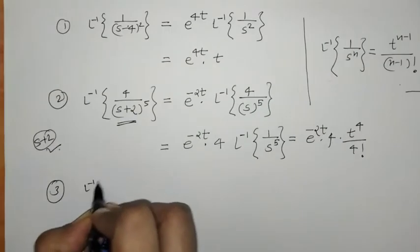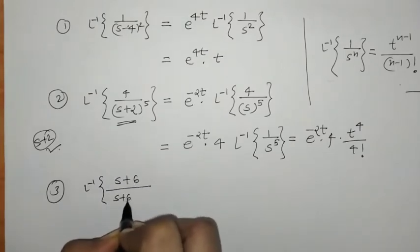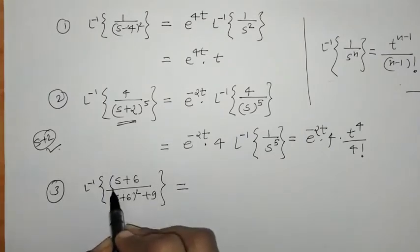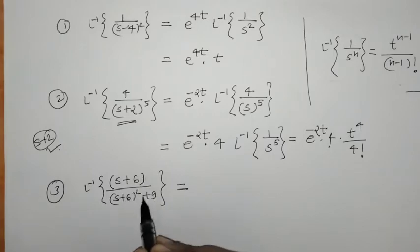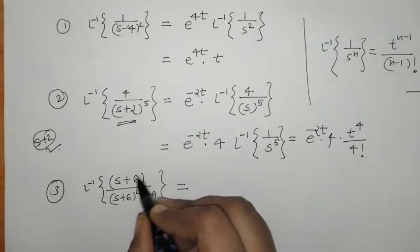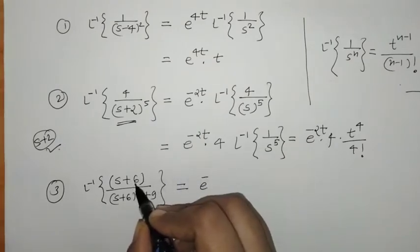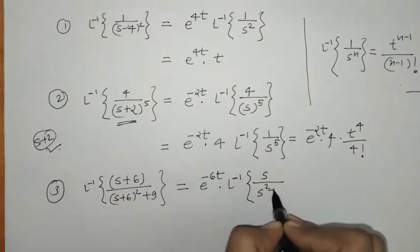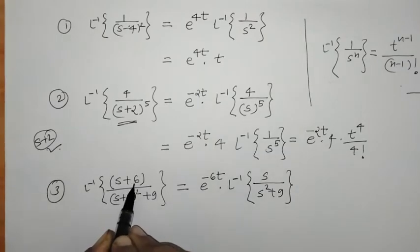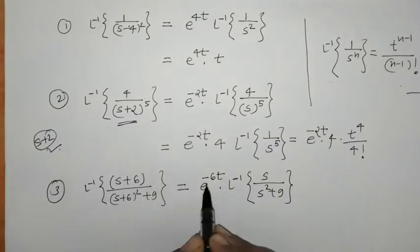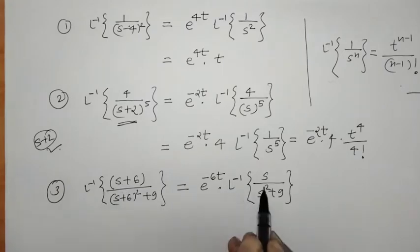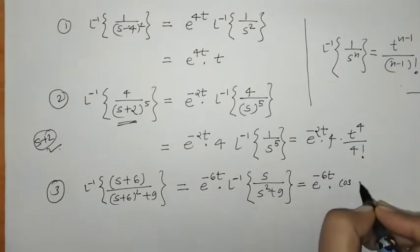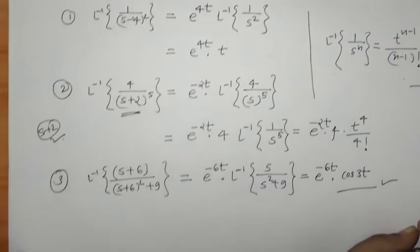Next, find L⁻¹{(s+6)/((s+6)²+9)}. We have s+6 in the expression, so we apply the first shifting property by taking plus 6 outside, giving e^(-6t). The remaining term is L⁻¹{s/(s²+9)}, which equals cos(3t) by the basic inverse Laplace transform formula. So the answer is e^(-6t) · cos(3t).